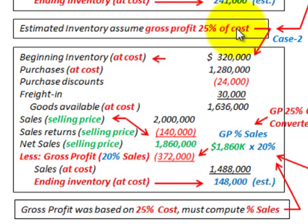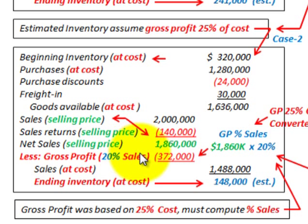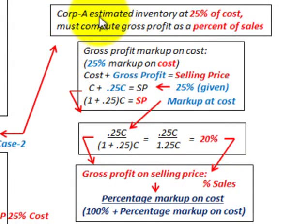Now for Case 2, we estimate inventory assuming a gross profit of 25% of cost. All the beginning inventory and purchase numbers are the same at cost, and our sales are again at the selling price. The difference here is that our gross profit is calculated at cost, so we have to convert it to a percentage of sales to match our selling price figures.